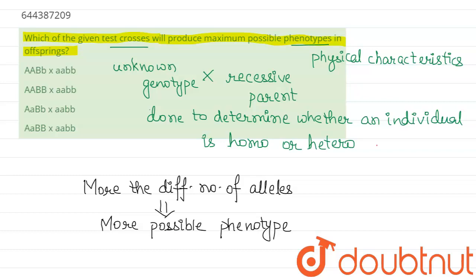Now if we see all these options one by one and matching it with this fact given, the first option says AABb cross aabb. So this small b is same as this, so this will not produce maximum phenotype. This option is wrong.